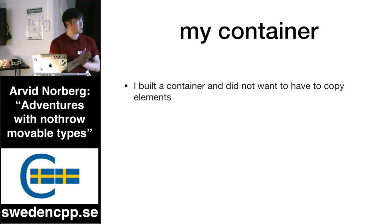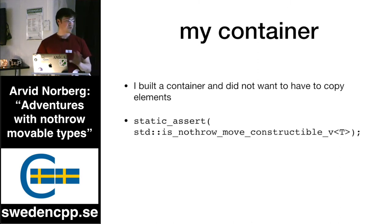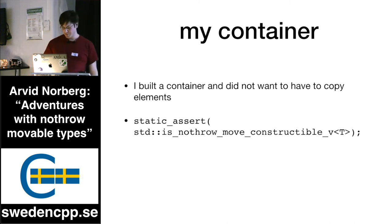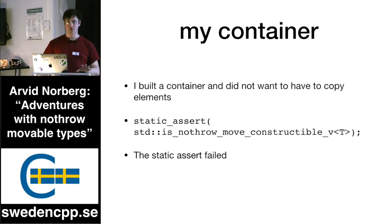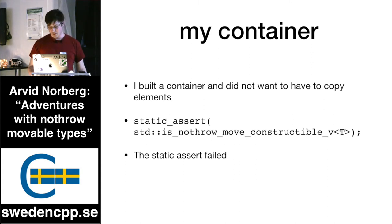However, I built my own container, and for practical reasons I couldn't deal with move failing, so I put a `static_assert` like this: whatever you tried to put in my container had to be nothrow move constructible. I was quite surprised that this started failing, because I was so sure that all my types would be well-behaved and not throw in the move constructor. So I started to drill down into this, and this is basically the inspiration for this presentation.